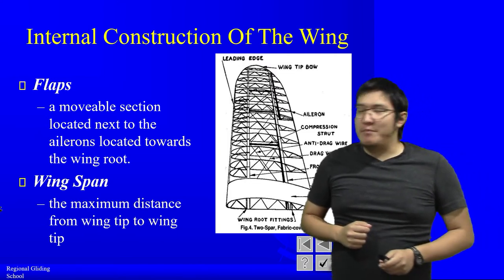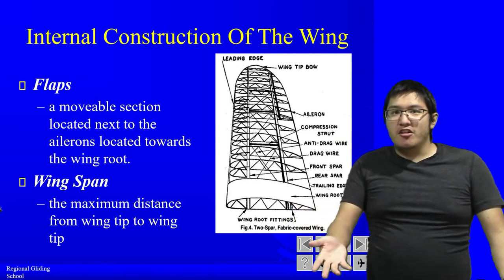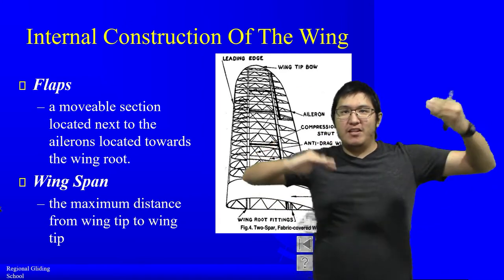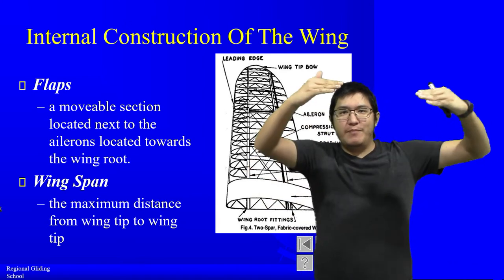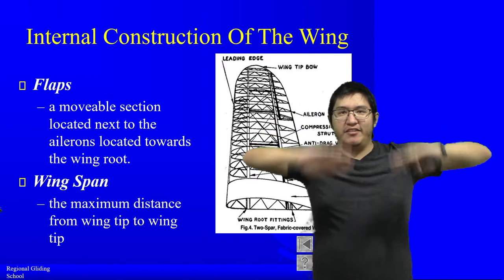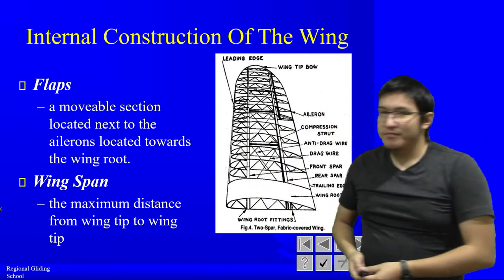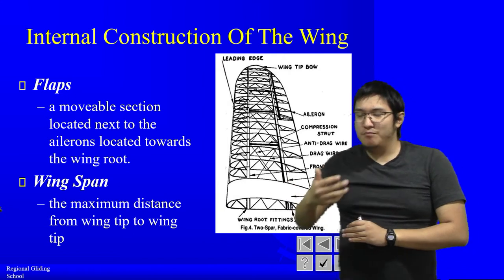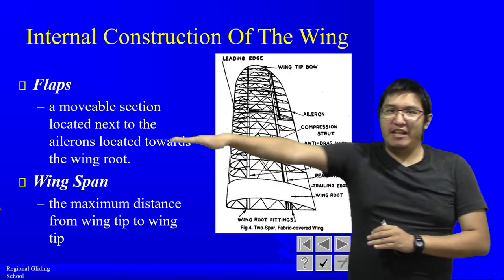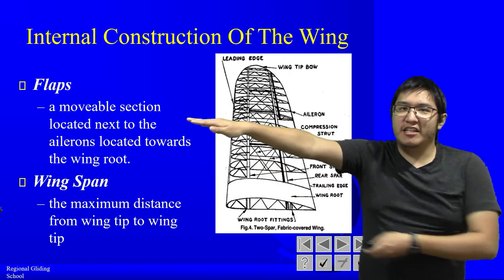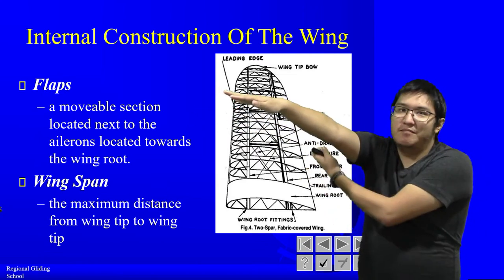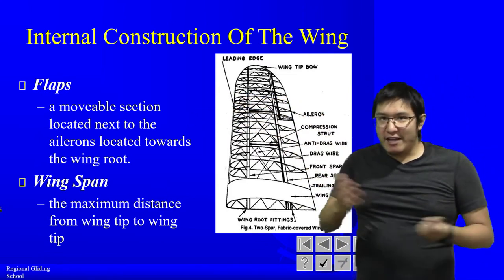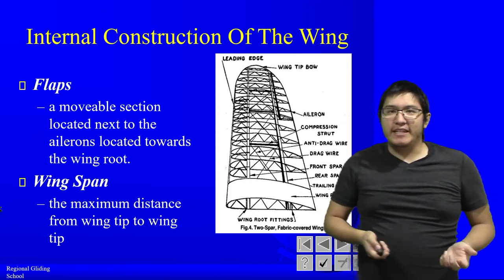Next up, we have what we call flaps. Flaps are another movable section, but instead of going in opposite directions, they both drop or raise together. They are located close to the wing root, by the trailing edge. So if the aileron is out near the tip, the flap will be somewhere back toward the root. We will cover flaps in more detail in future lessons.